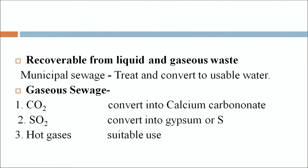Municipal liquid waste comes from hotels and residential colonies in the form of sewage. Various gases emitted from industrial installations have potential use but are not being utilized. These gases can be converted into methanol and petrol. Carbon dioxide emitted from various sources can be used to produce calcium carbonate. Sulphur dioxide emitted can be converted into either elemental sulphur or gypsum. Waste heat from hot gaseous emissions can also be recovered for suitable use.